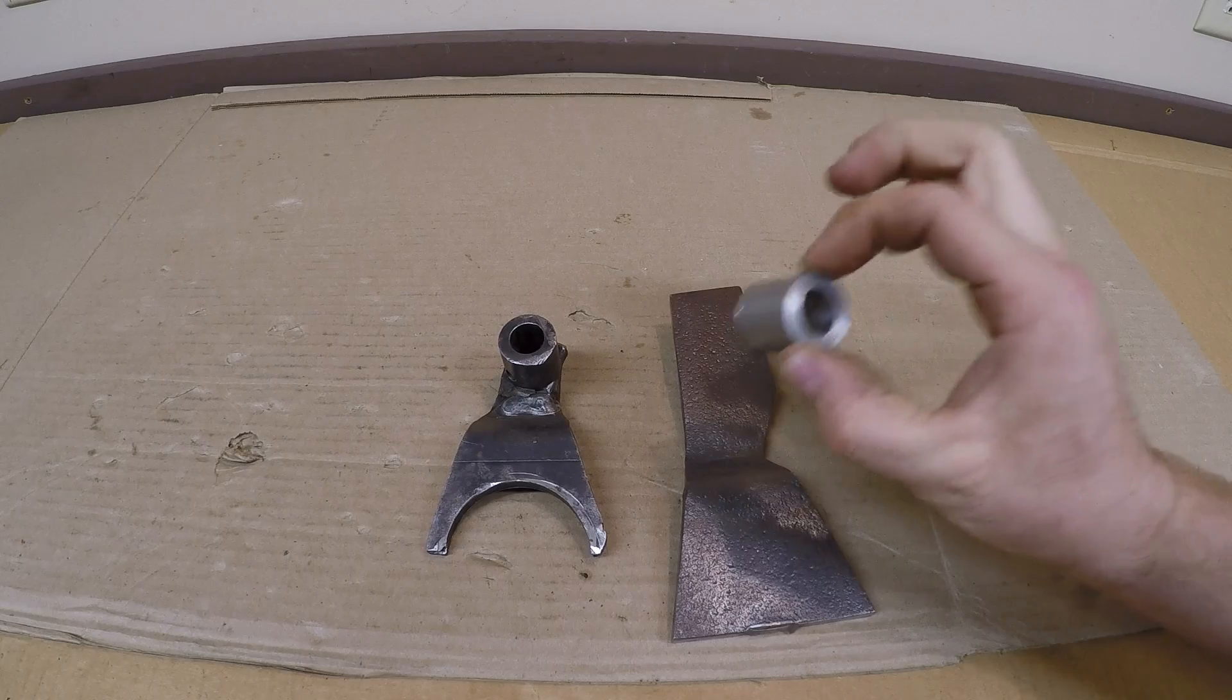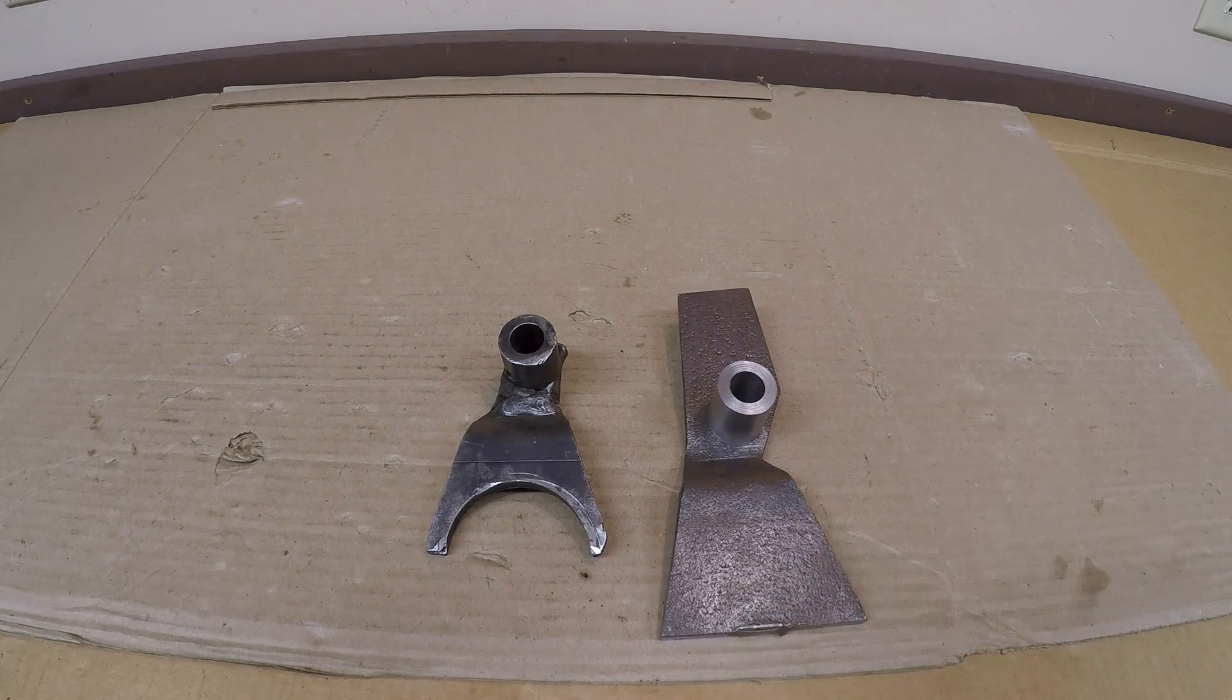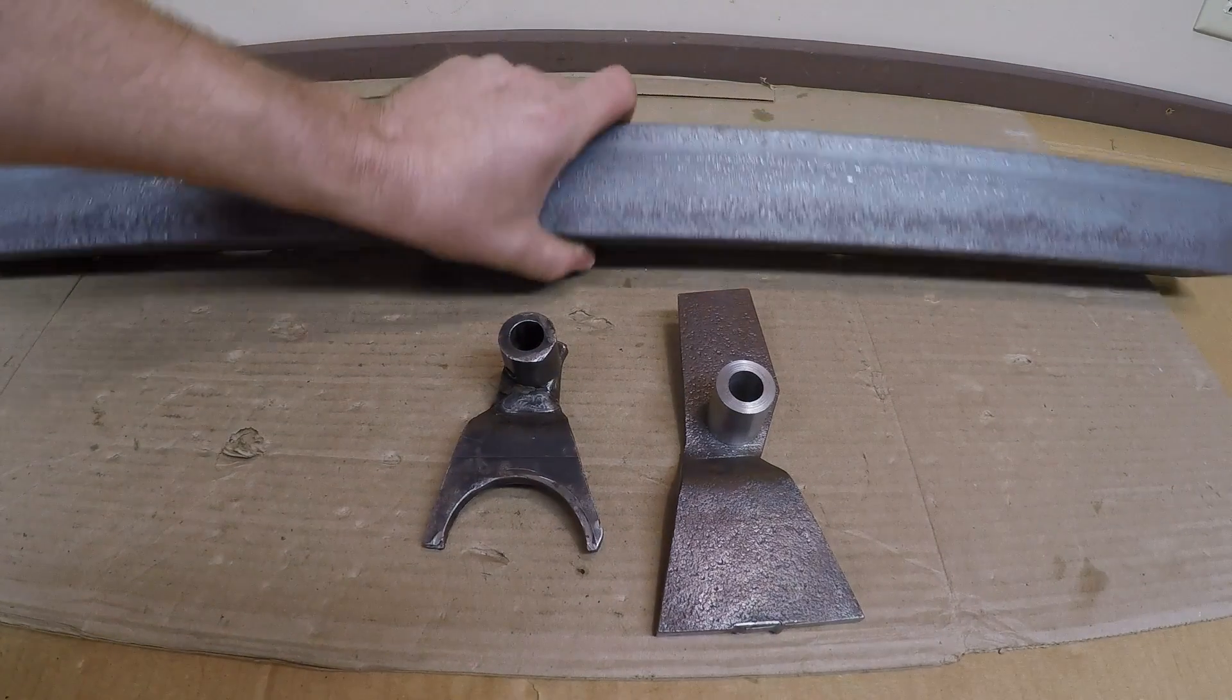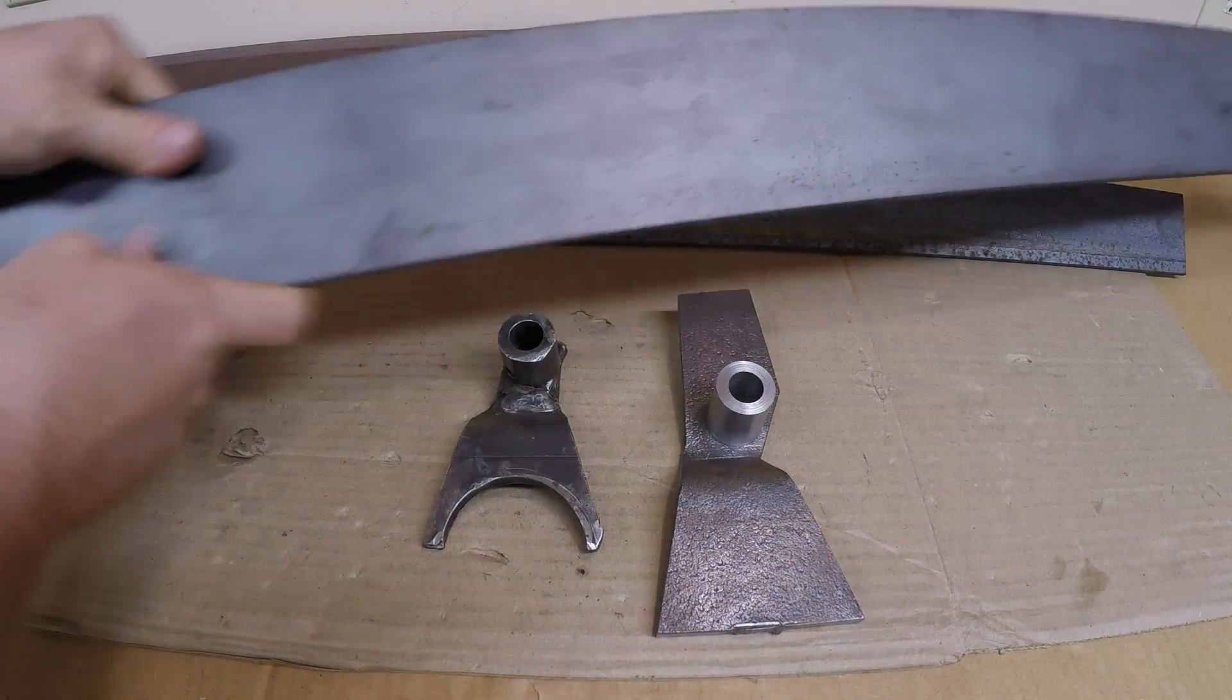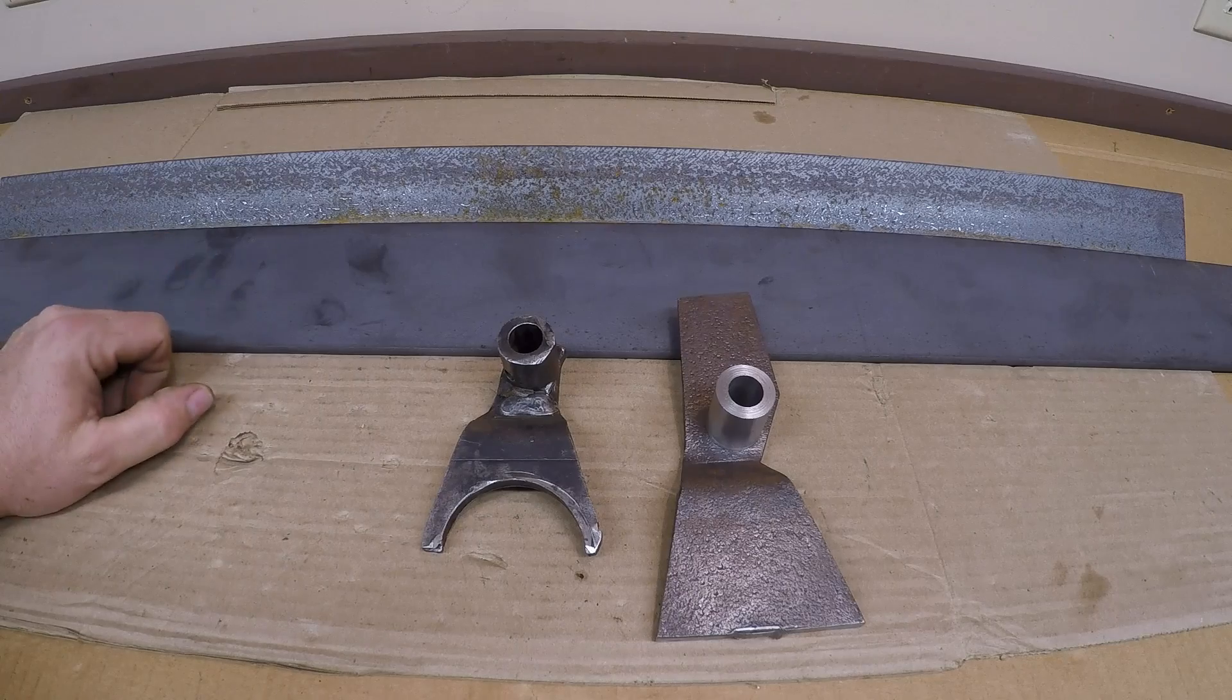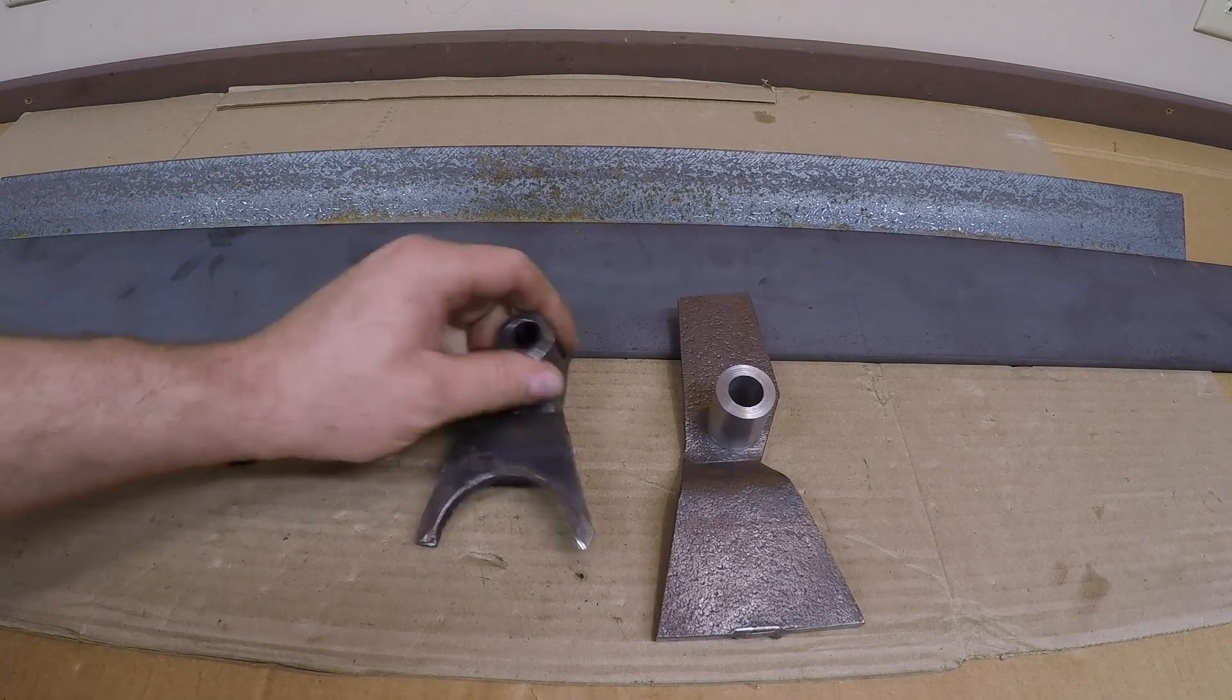I'm going to start out by making some sort of fixture modeled from the old damaged fork. I've got some quarter-inch thick angle steel and quarter-inch thick by four-inch wide flat steel plate. Let's see what I can come up with.